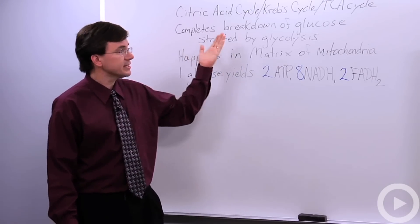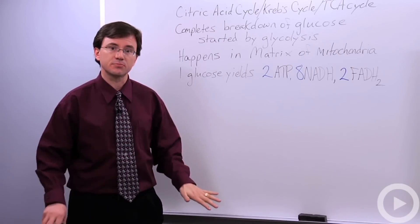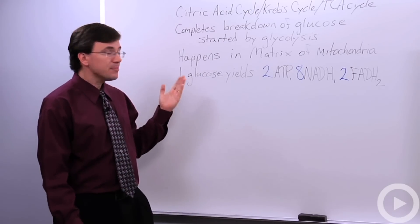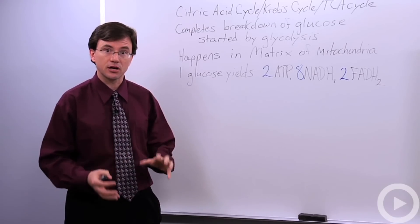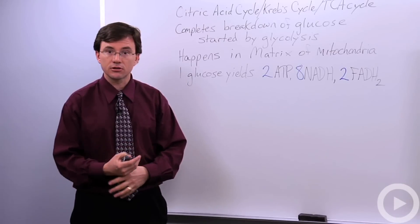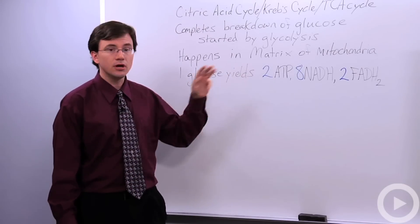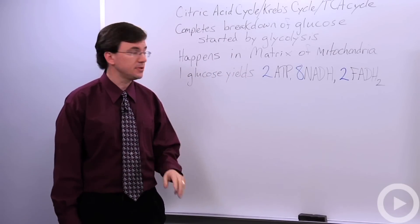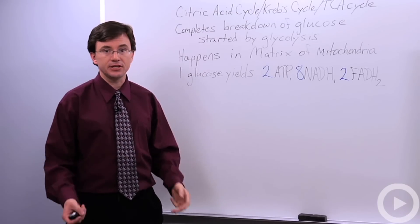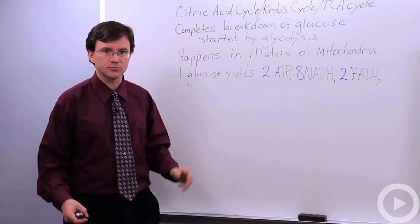It's the final breakdown of glucose after the glucose was initially split in half by glycolysis. It happens in the matrix part of the mitochondria, and the ultimate yield of the Krebs cycle for every one glucose that enters the cell gives you a pair of ATPs, 8 NADHs, and a couple of FADH2s, which I'll discuss a little bit more in just a moment.